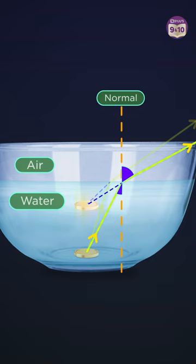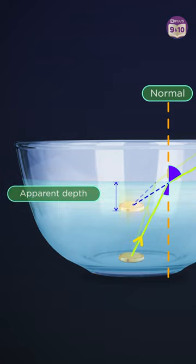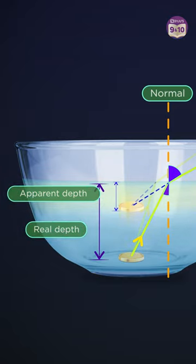It gives you a perception that the coin is at actually a shallower depth than where it is right now. This is apparent depth, which is less than the real depth. This is the magic of refraction.